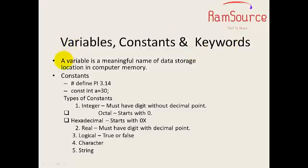Variables, Constants and Keywords: A variable is a meaningful name of data storage location in computer memory. When compared to variables, constants are contradictory. For constants, the value cannot change. For example, hash define is a preprocessor directive where a value is assigned to a name, or we use the const keyword.